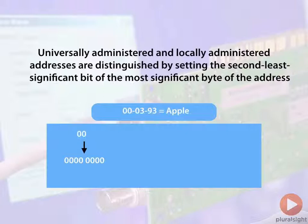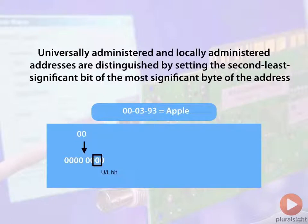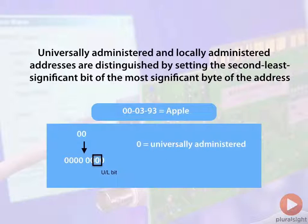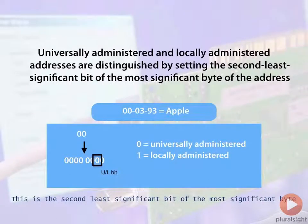If we look at the most significant byte of the address, the second least significant bit is right there, and that bit is known as the UL bit — meaning either Universal or Local. We toggle that bit: if it's set to 0, that indicates the address was universally administered; if it's set to 1, that tells us it is locally administered. We call it the UL bit.